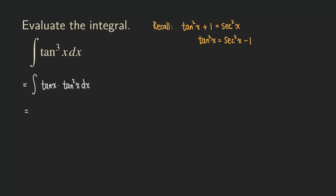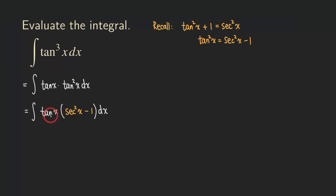At this point we can't do much yet with the integration, so we need to do some manipulation first. I'm going to replace the tangent squared of x by secant squared of x minus 1. Now, since this is a product, we can actually distribute the tangent into the terms inside the parentheses. We want to try things out, so this is one thing we can try.